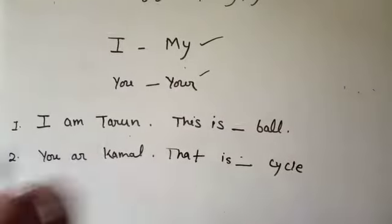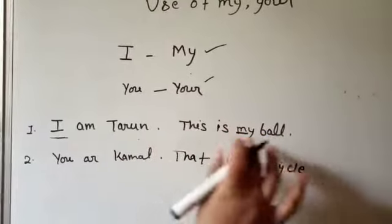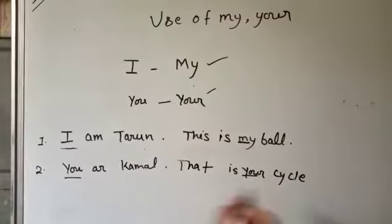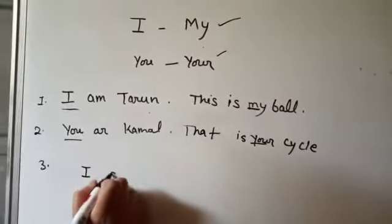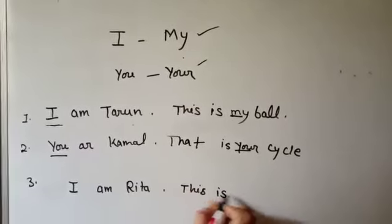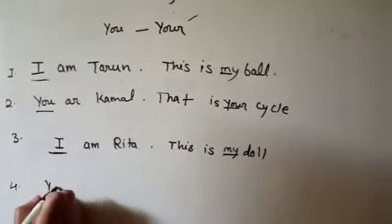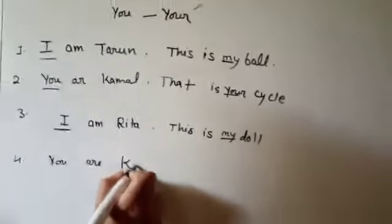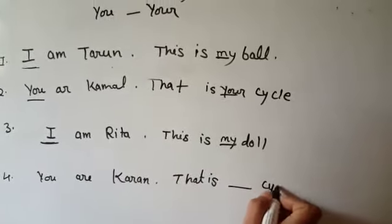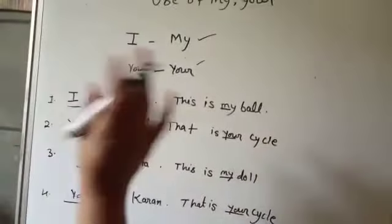I am Tarun. This is my ball. You are Kamal. That is your cycle. इसी तरह, I am Rita — this is ___ doll. 'I' को देखके आप जान जाएंगे — My. You are ___ — that is ___ cycle. 'You' के साथ यहाँ क्या आया? Your cycle.